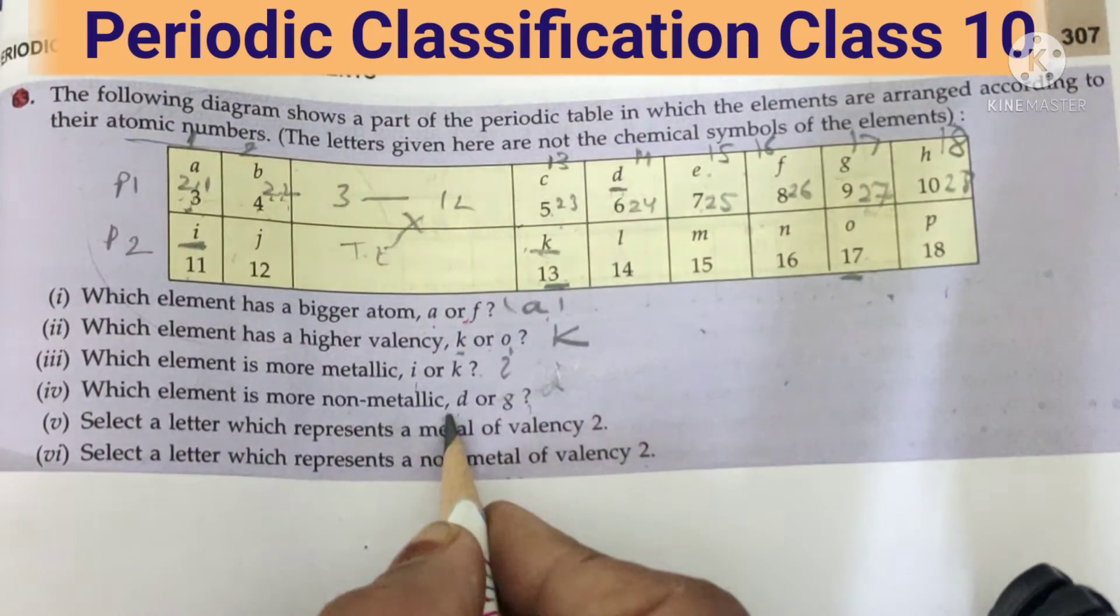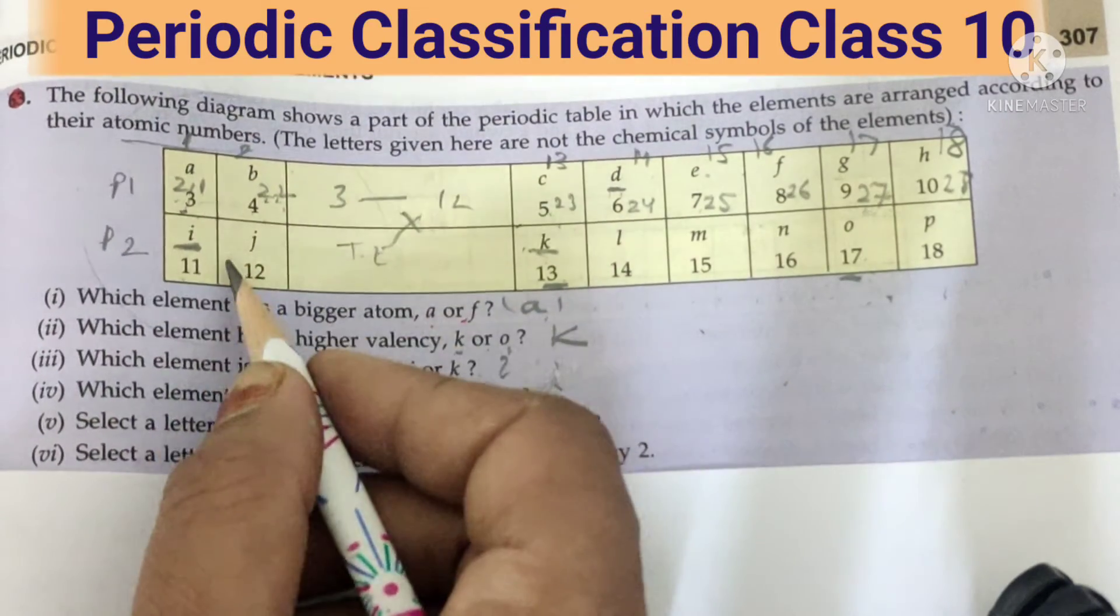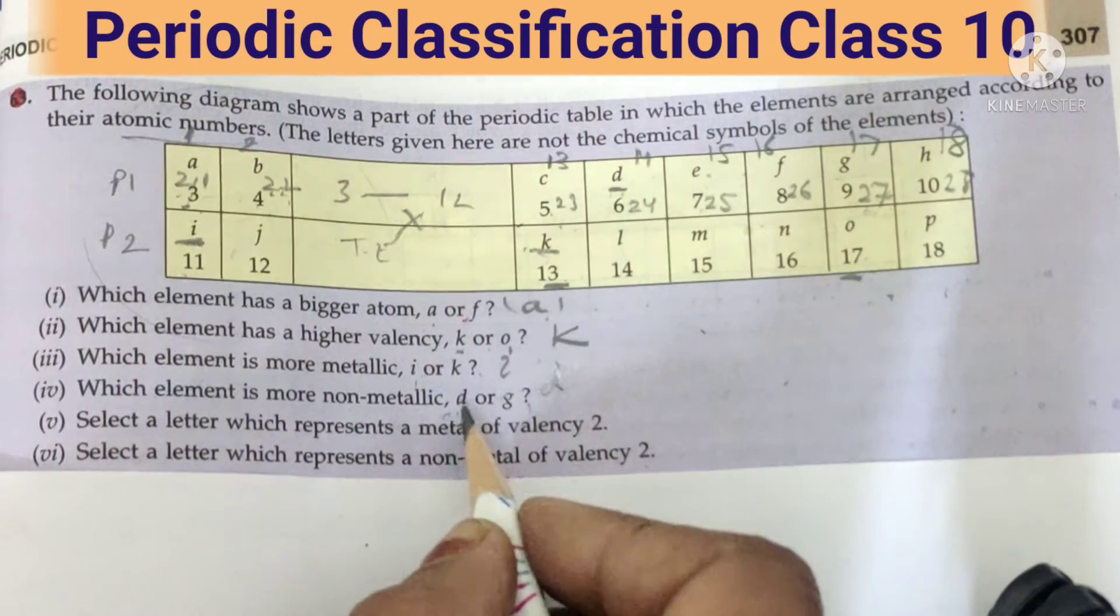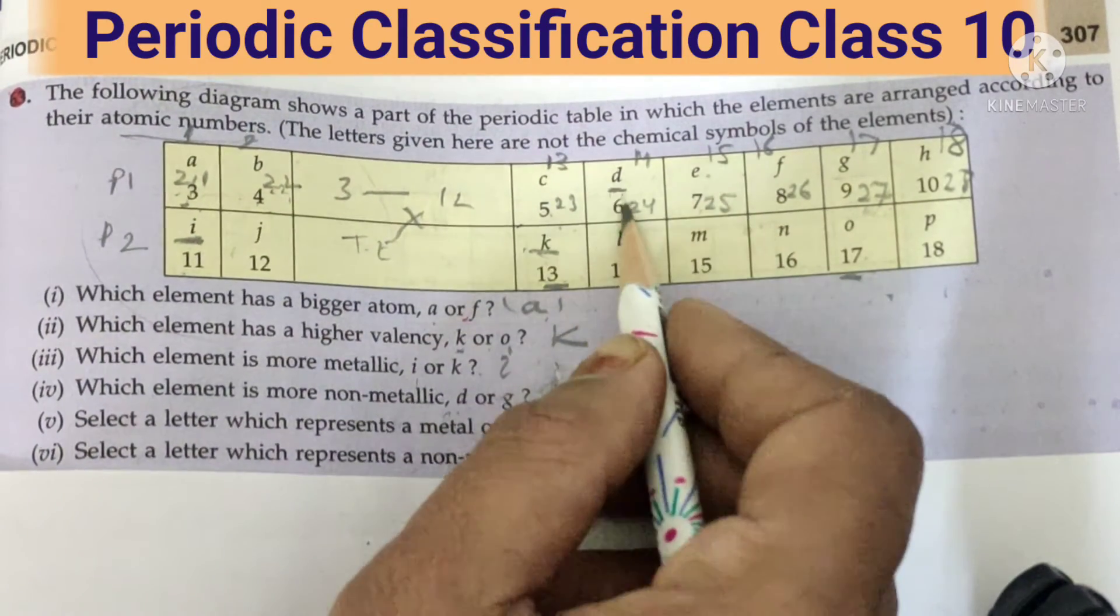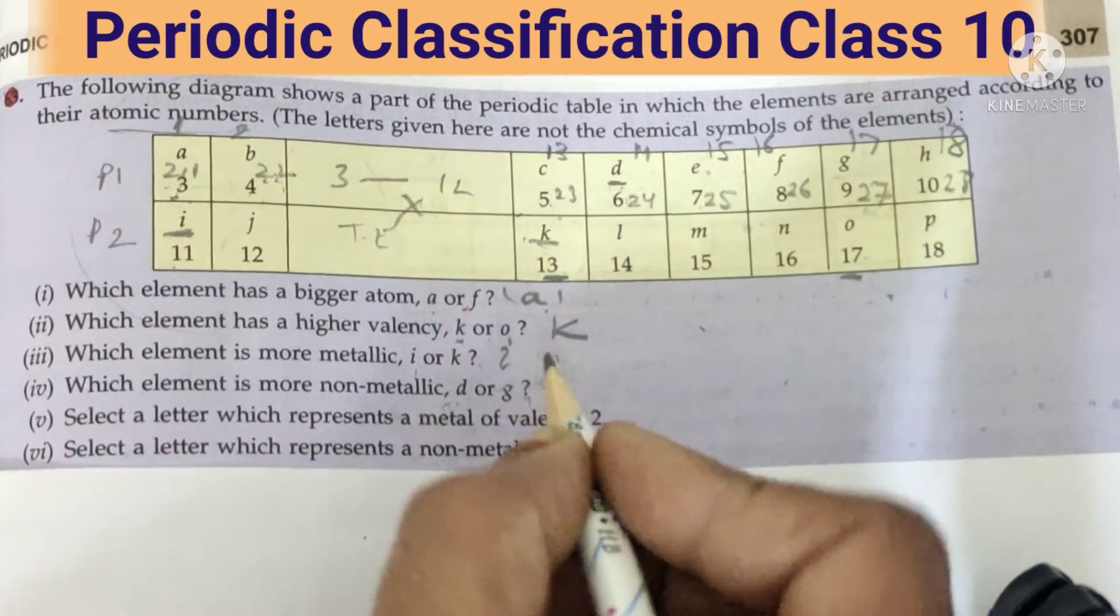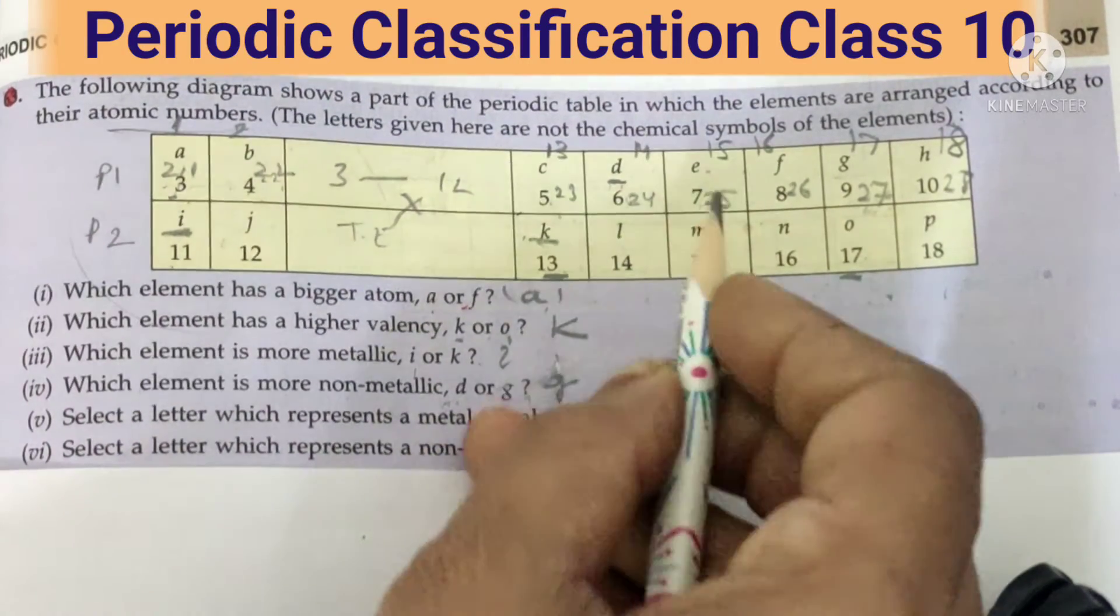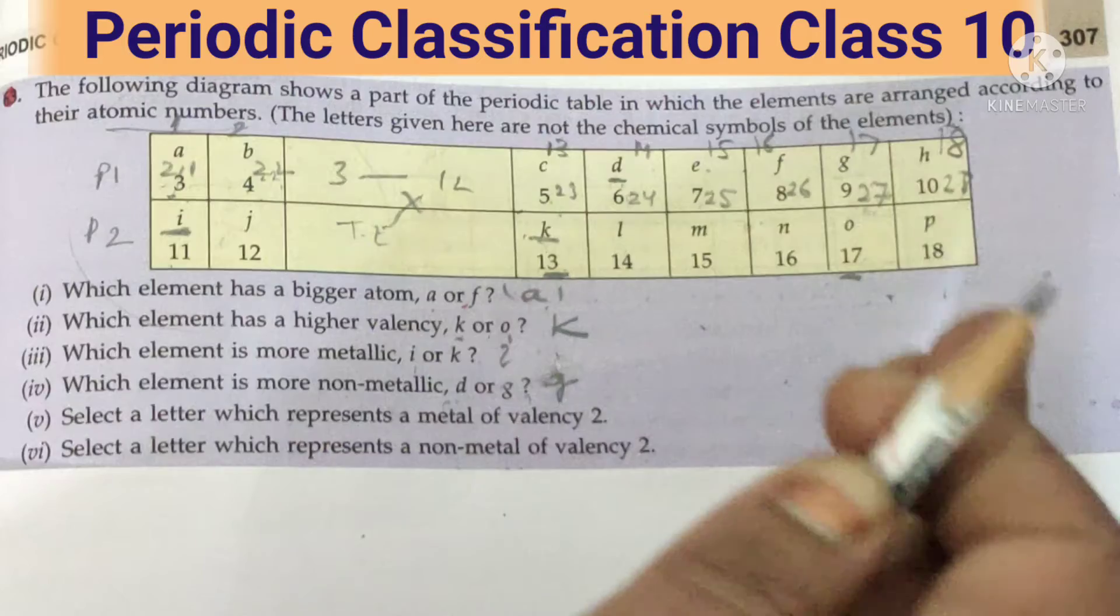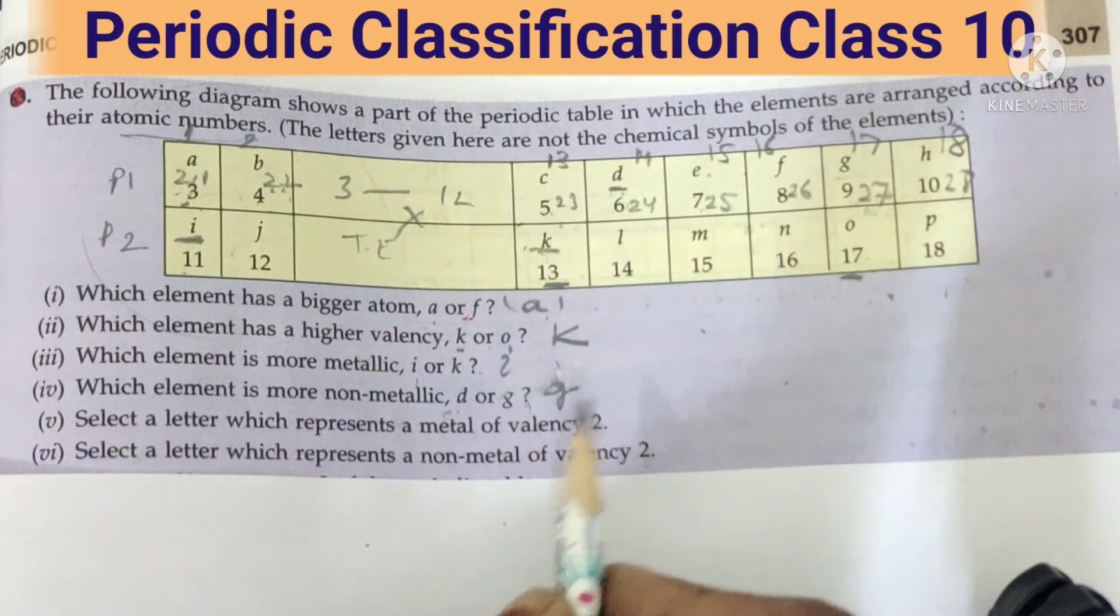Next. Which element is non-metal? So this side metals are there, this side non-metals are there. D or G? So my correct answer is G. Why? Because non-metals are to the left side, so they are G. Next.